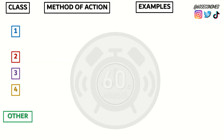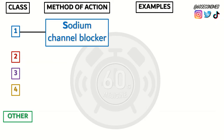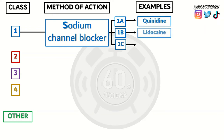Class 1 are sodium channel blockers and are further distinguished into class 1a, 1b, and 1c. Examples being quinidine for 1a, lidocaine for 1b, and flecainide for 1c.